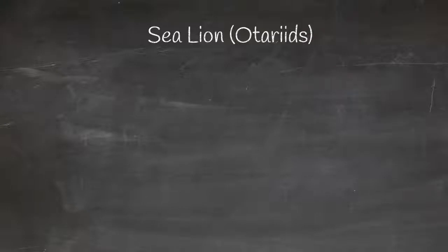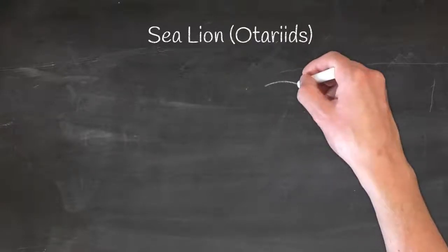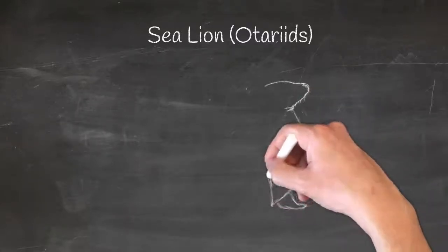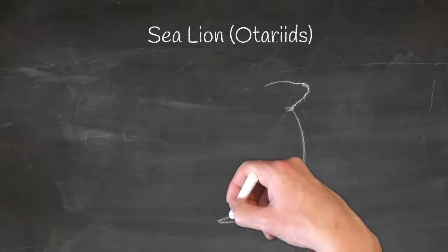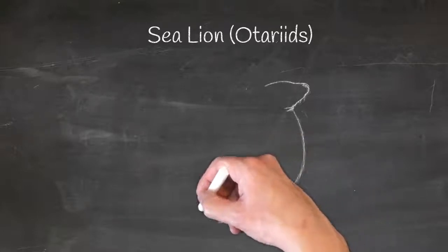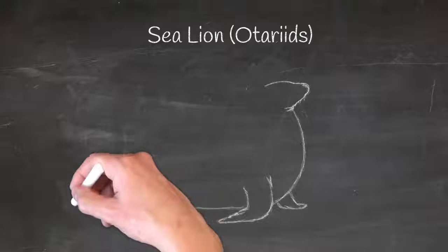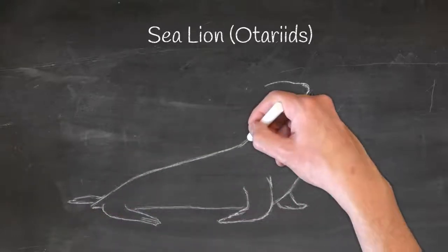Sea lions are part of the family Otariidae, also called eared seals. Generally, depending on the species, sea lions are larger than seals, some getting up to 2,500 pounds, and are very vocal on land, barking loudly. When you're near them, you'll know.